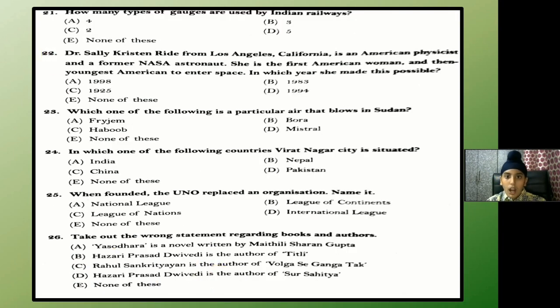How many types of gauges are used by Indian Railways? The answer is A — 4.